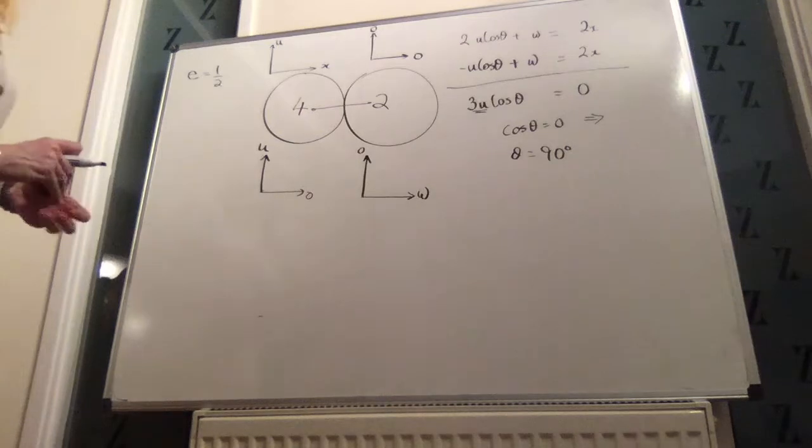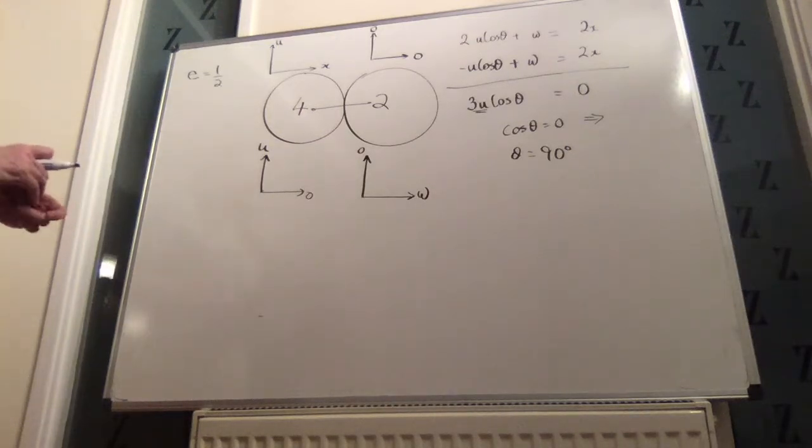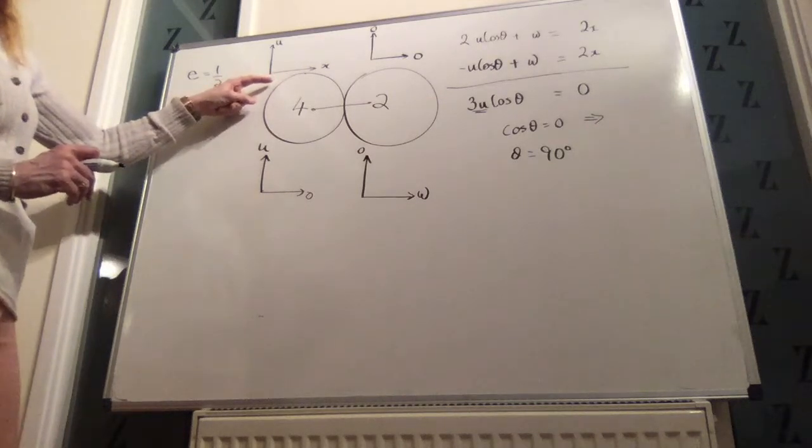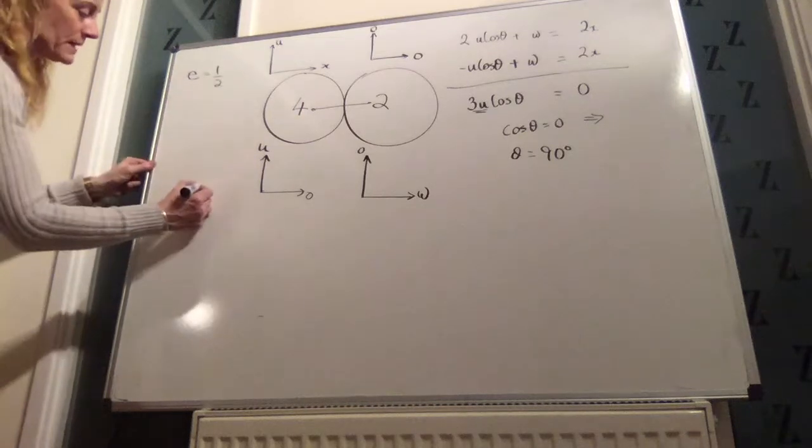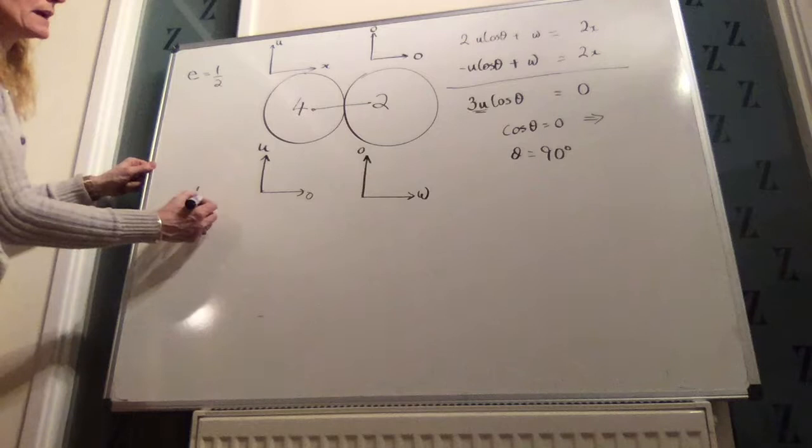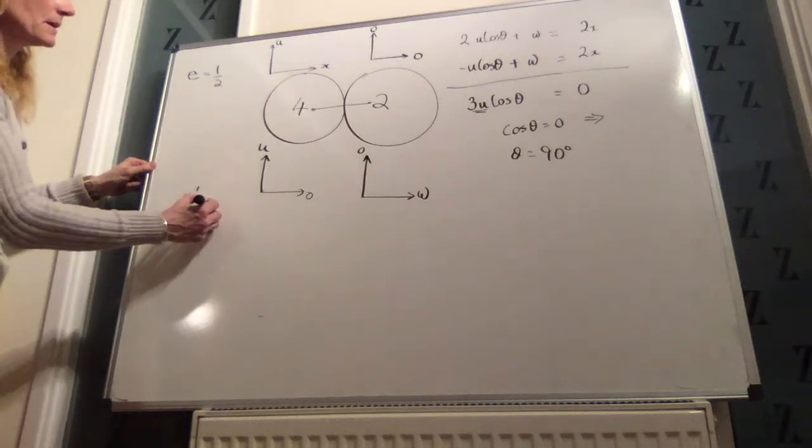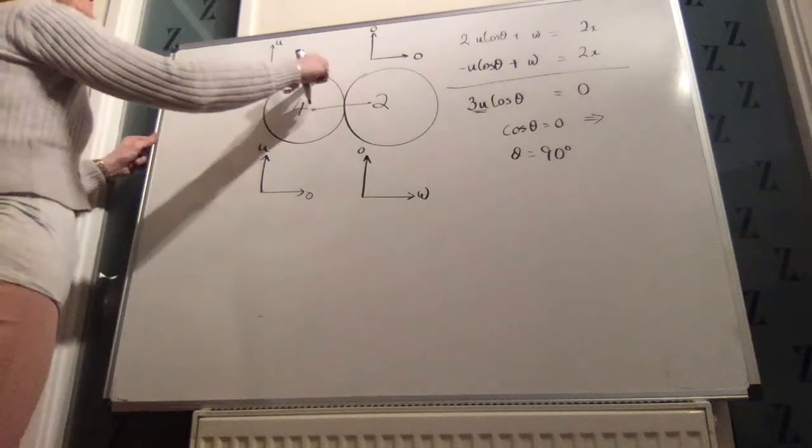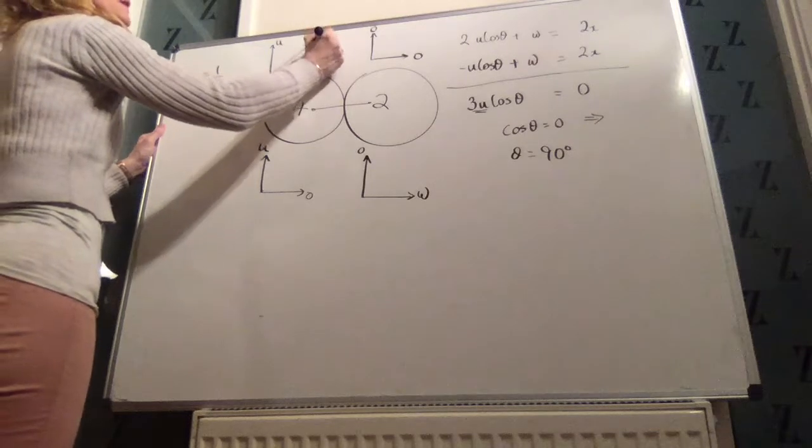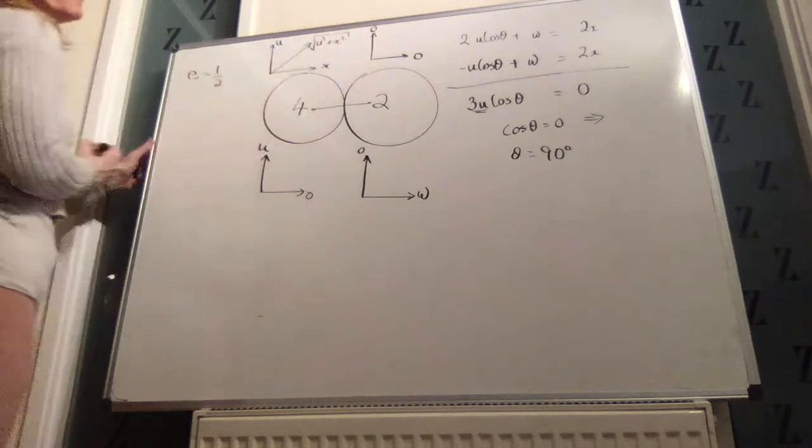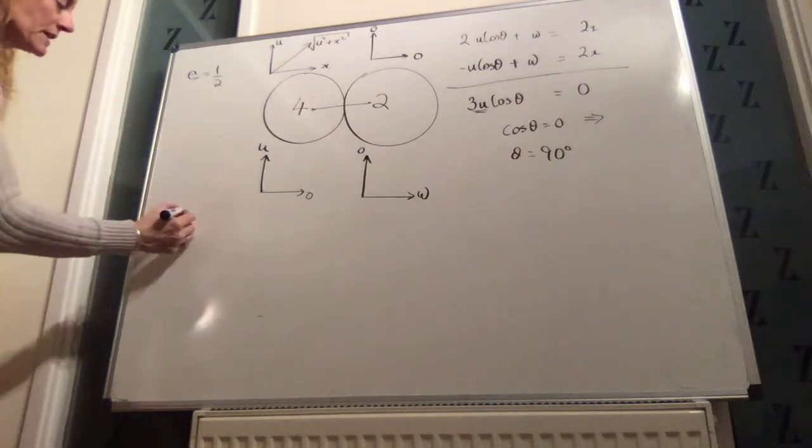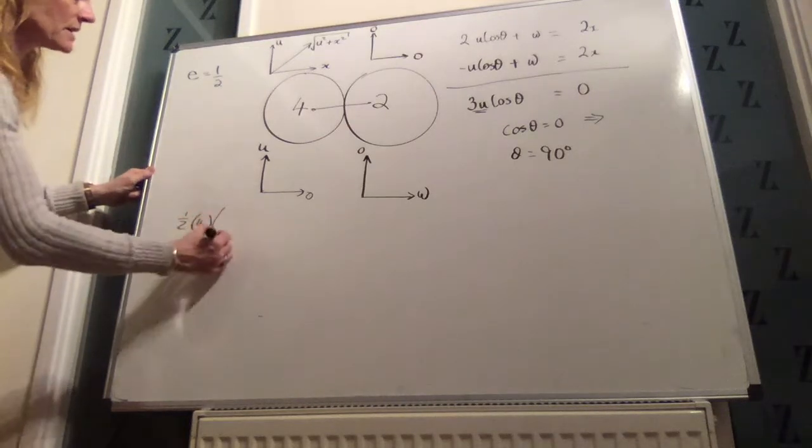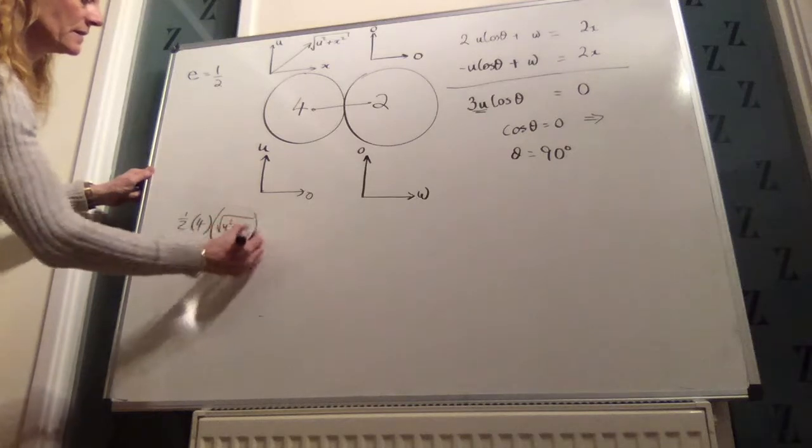And show that the kinetic energy gained by the 4 kilogram is equal to half of that lost by the 2 kilogram. So, in this situation, then, the kinetic energy gained will be a half m u squared. Well, actually, if that's x, then this is going to be u squared plus x squared, the square root of. By Pythagoras' rule. So, the kinetic energy of this sphere is a half times its mass times its velocity squared.